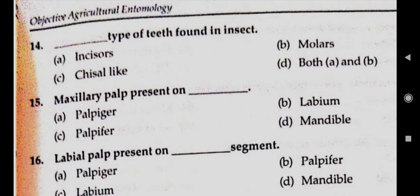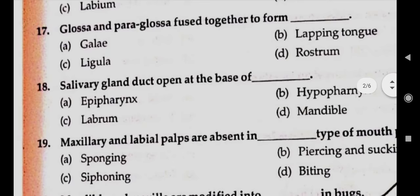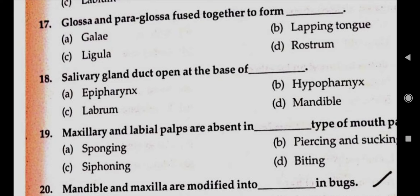Question number sixteen: labial palp present on. Answer B, palpifer. Question number seventeen: glossa and paraglossa fused together form answer C, ligula. Question number eighteen: salivary glands open at the base of. Answer B, hypopharynx.